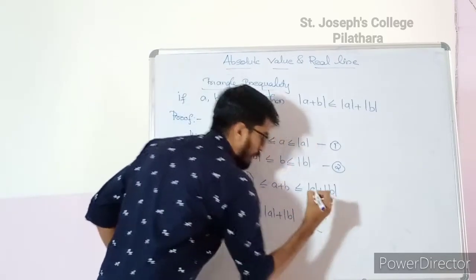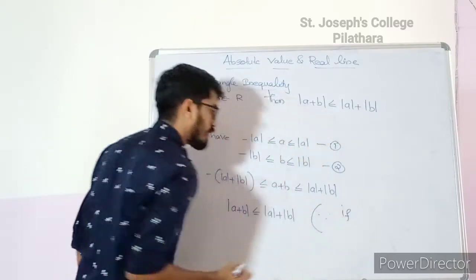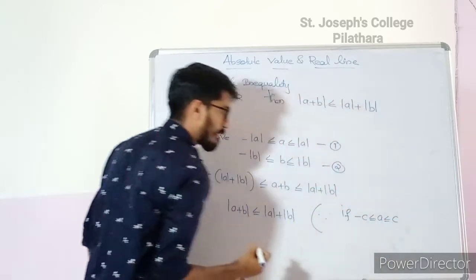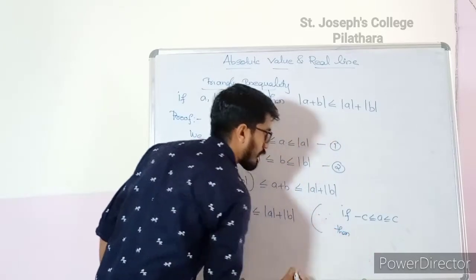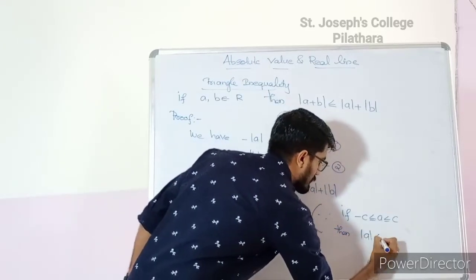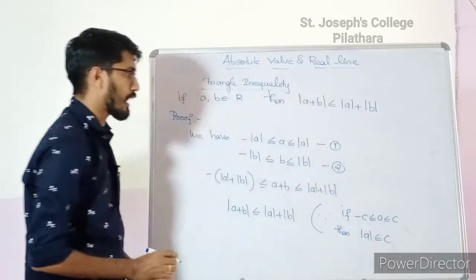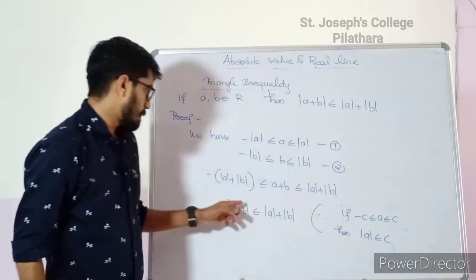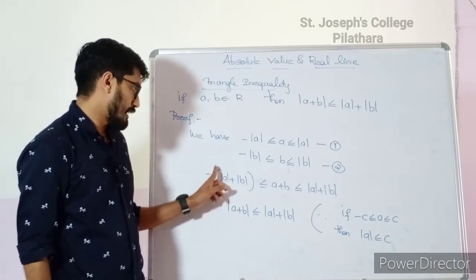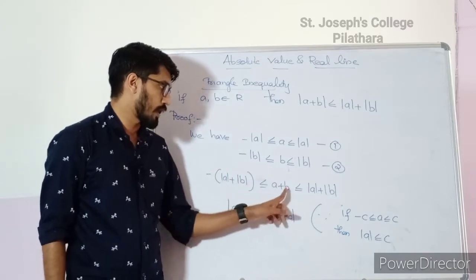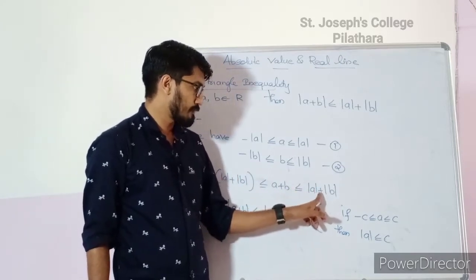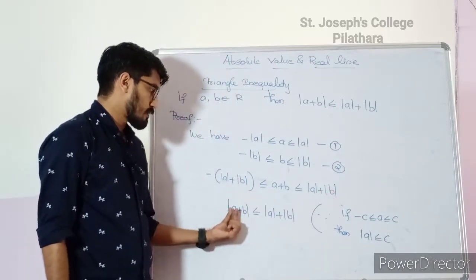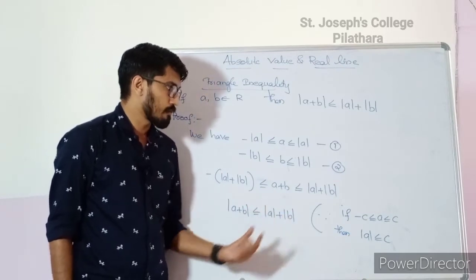Since we have the result: if −c ≤ x ≤ c, then |x| ≤ c. Therefore, we can write −(|a| + |b|) ≤ a + b ≤ |a| + |b|, which gives us |a + b| ≤ |a| + |b|.